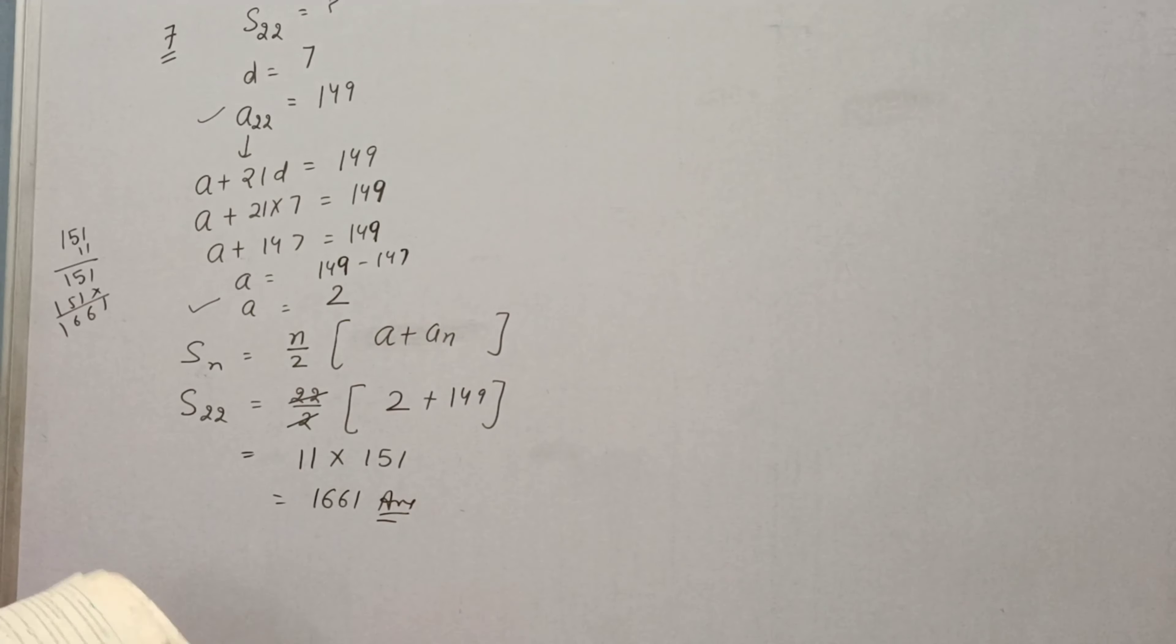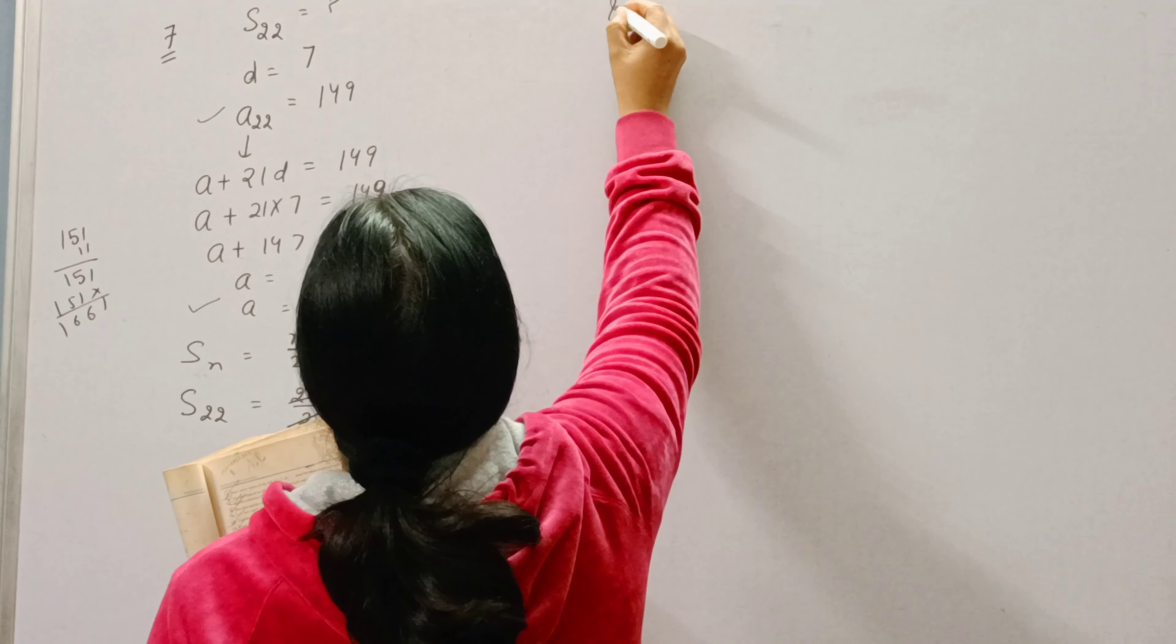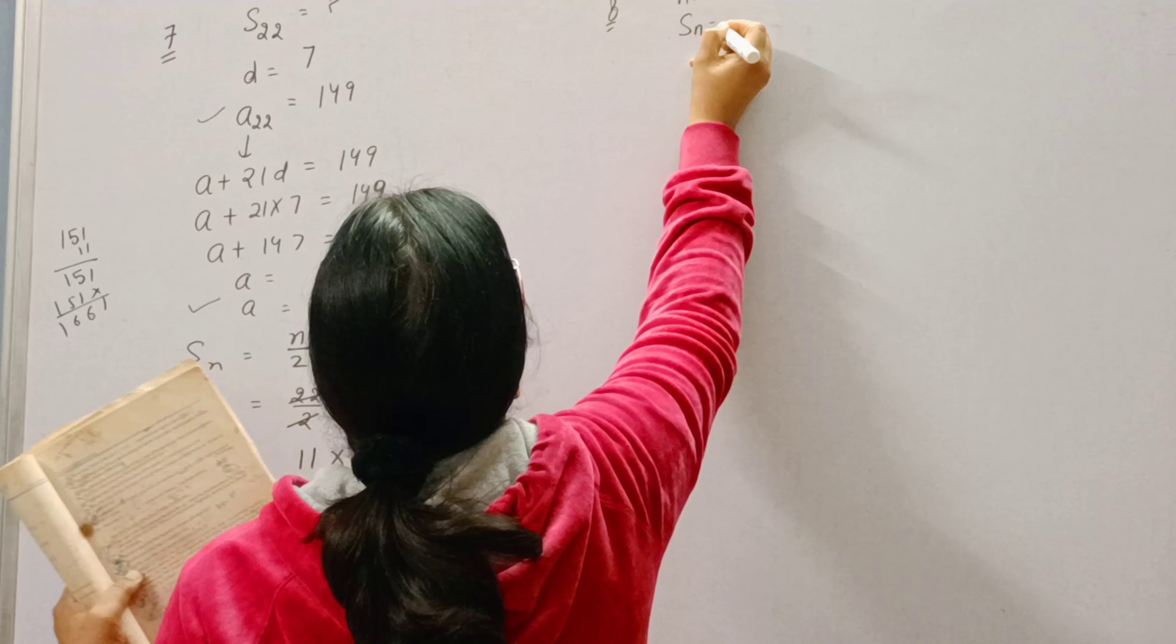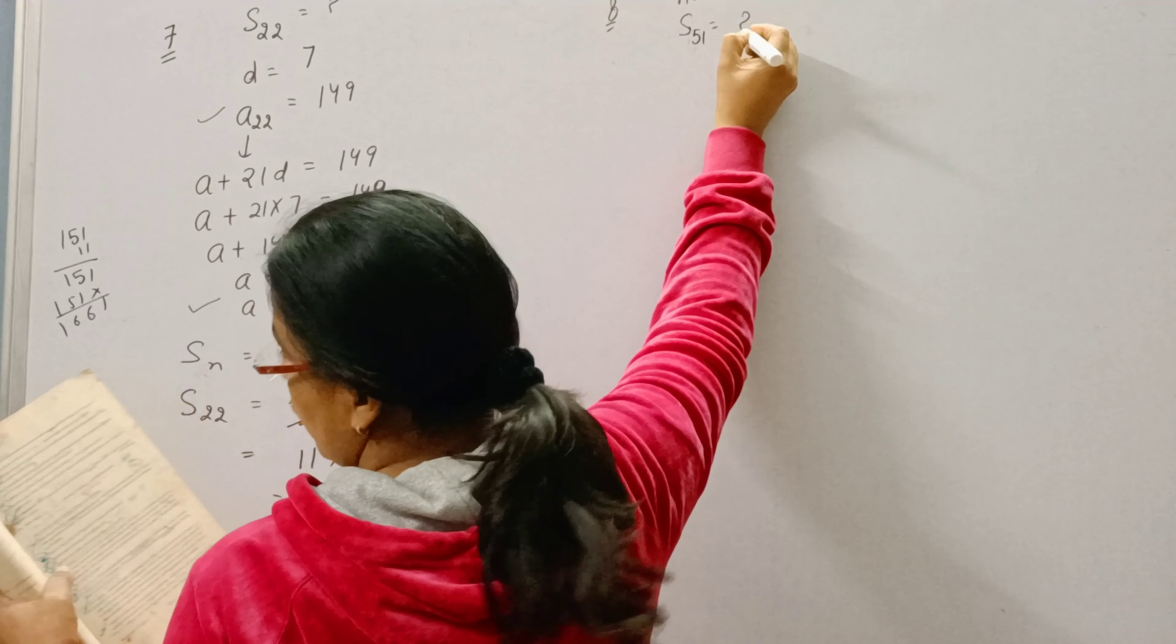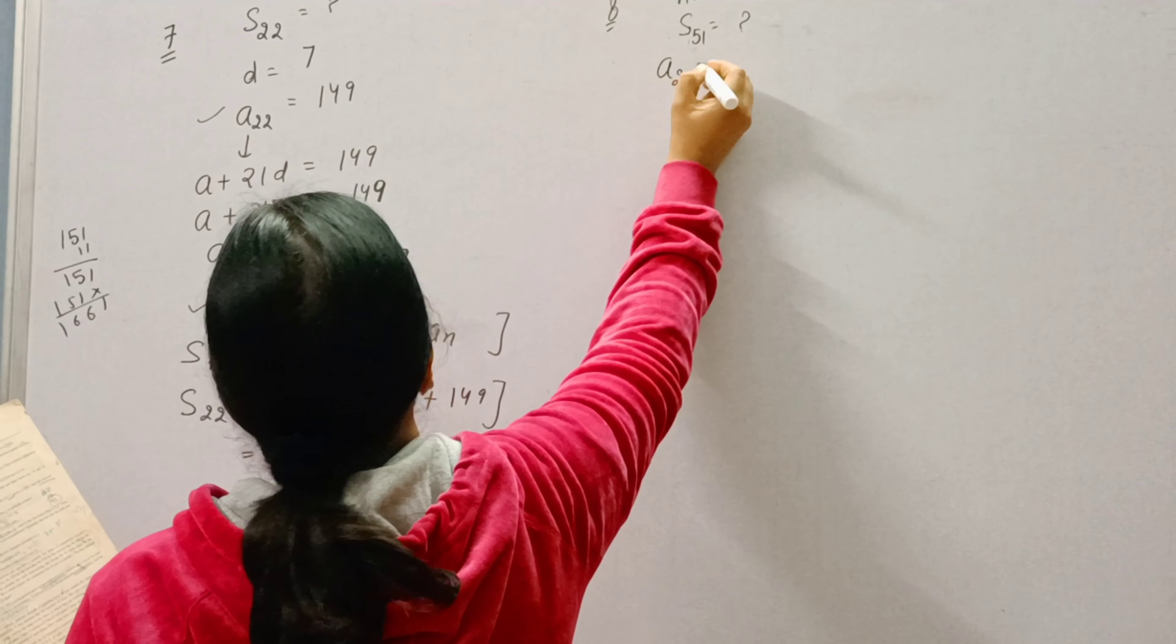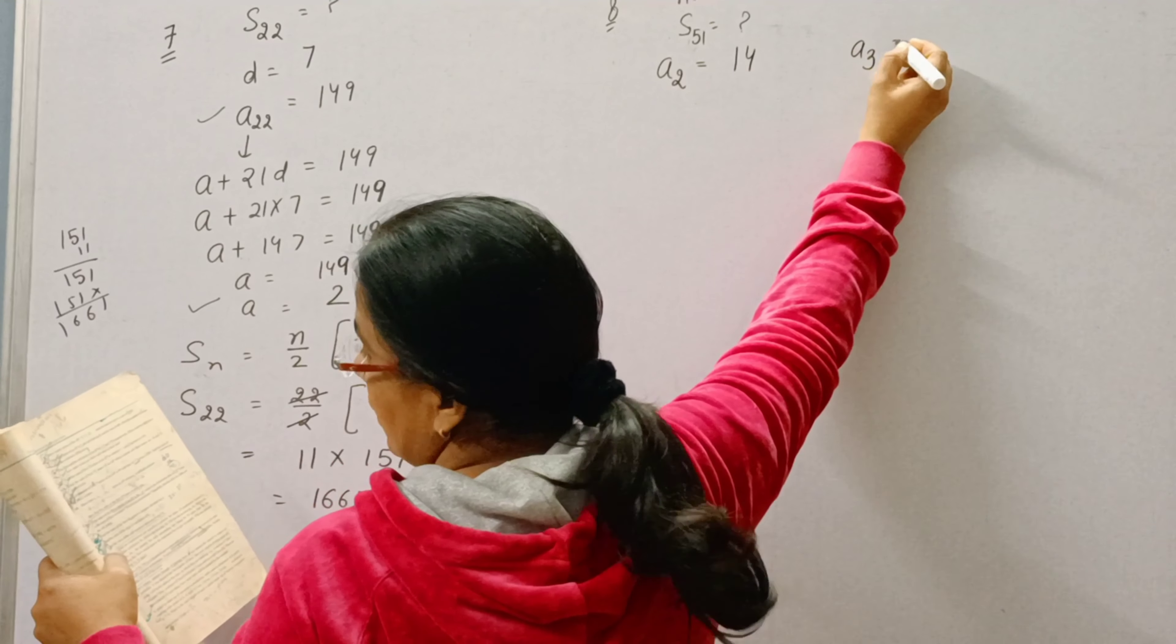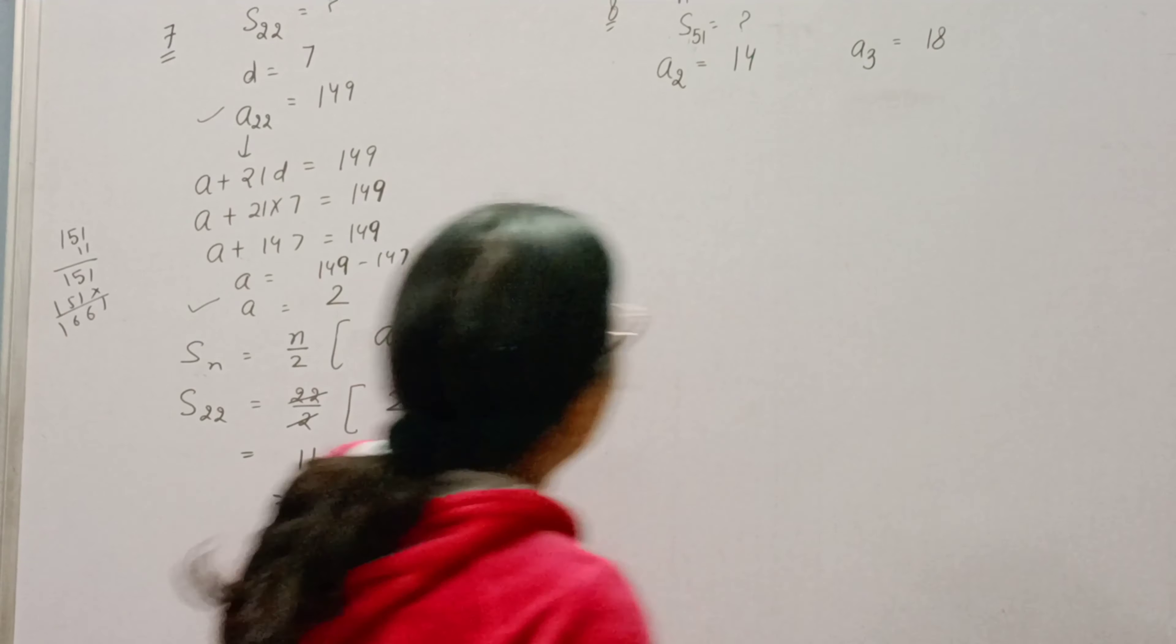Now question number 8: Find the sum of first 51 terms. N is equal to 51 and we need to find S51. Find the sum of first 51 terms of an AP whose second term is 14 and third term is 18.